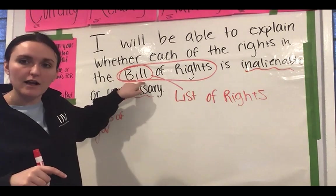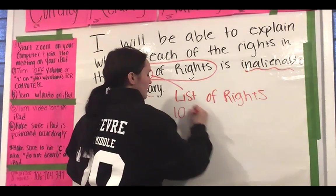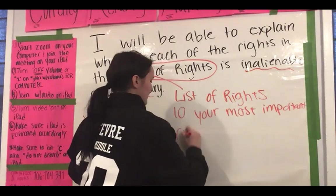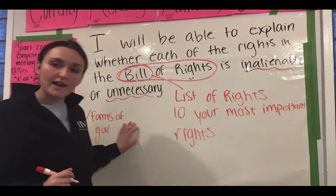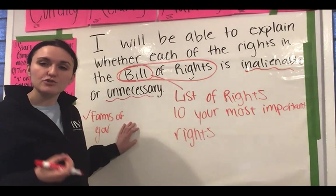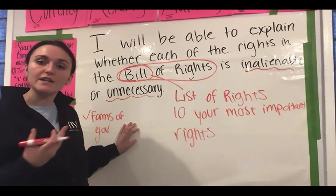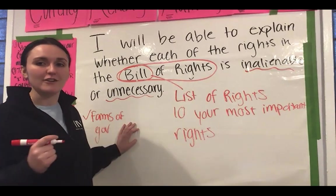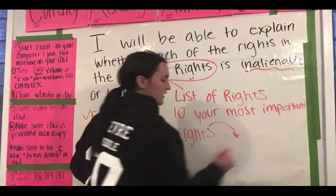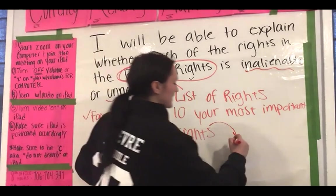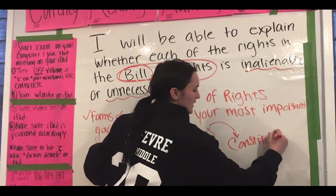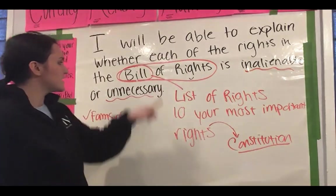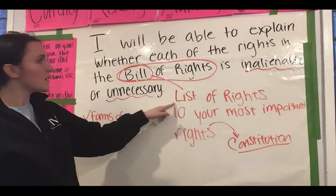A bill, if it's got a capital B, is usually some type of formal list. So the Bill of Rights is literally a list of rights — your most important rights in this country are listed under the Bill of Rights. It's ten of your most important rights. These rights are written in a document that countries use to organize their government when they first gain independence. It's called a constitution. So the Bill of Rights is located in the Constitution.